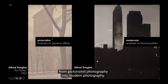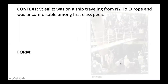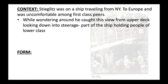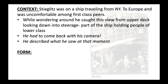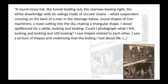Khan Academy presents one of his Pictorialist photographs on the left by Alfred Stieglitz, and then his more modernist approach to photography on the right, emphasizing formal qualities — shape, line, texture, contrast. So he was on a ship traveling from New York to Europe, very uncomfortable among his first-class peers, so he started wandering around. While wandering, he caught this view from the upper deck looking down into the steerage — the part of the ship holding people of lower class. He didn't have his camera, so he went back to his room, got it, came back hoping everyone would still be there — and they were.